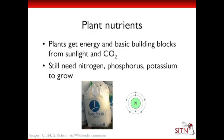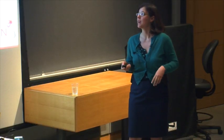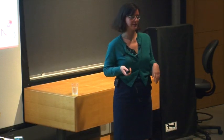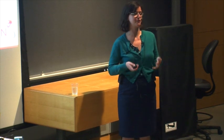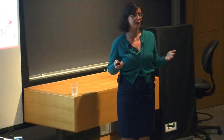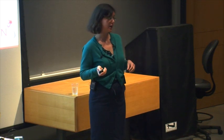Plants get their energy and basic building blocks from sunlight and CO2 via photosynthesis, which most people already know. But they also still need nitrogen, phosphorus, and potassium in order to grow. You'd recognize this if you've grown plants and fertilized them — fertilizers almost always have these three elements, which are essential for growth. Nitrogen is probably the most essential, and I'm going to use it as the signal for nutrients for the rest of the evening.